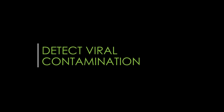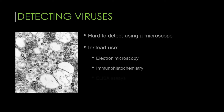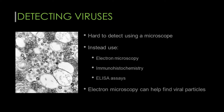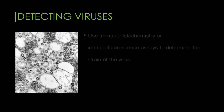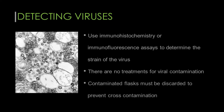How do you detect viral contamination in cell culture? Viral contamination is hard to detect using a regular light microscope, so we recommend using electron microscopy, immunohistochemistry, or ELISA assays instead. A test using electron microscopy is useful to find the presence of viral particles. Further testing using immunohistochemistry or immunofluorescence assays can also help find out more about the strain of the virus. Unfortunately, there are no treatments for viral contamination, so it is hard to recover the contaminated cell lines. Therefore, the contaminated flasks must be discarded to prevent cross-contamination of other cell lines.